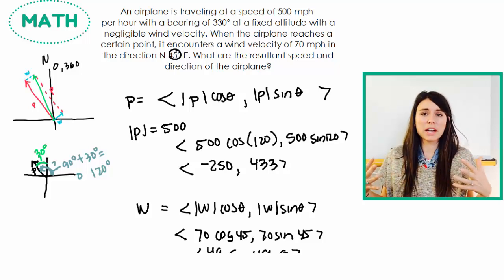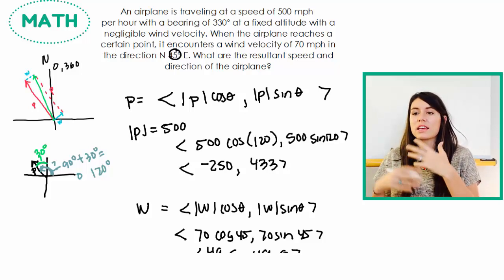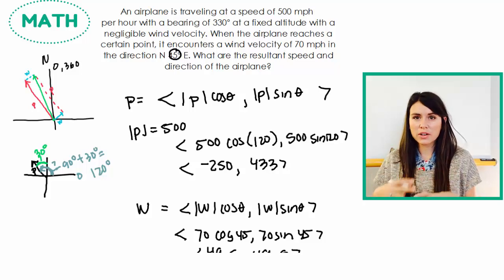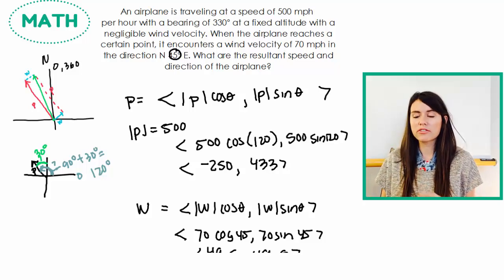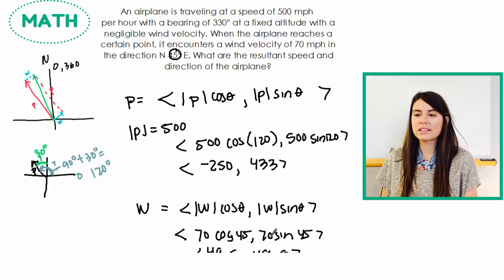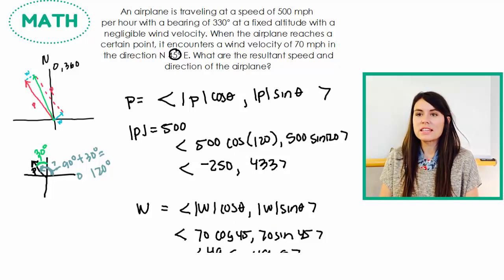So my wind vector is 49.5, 49.5. So that's kind of the hardest part, getting all of that figured out and understanding where those numbers are coming from. So now that we know what our wind and plane vectors are, now we're actually going to be solving for that resultant vector.